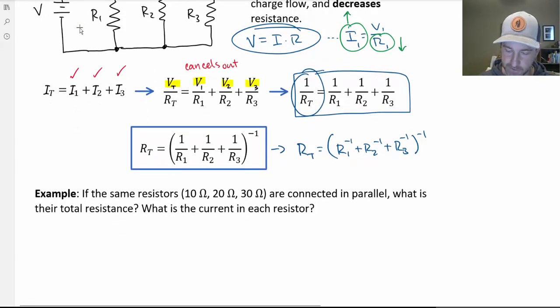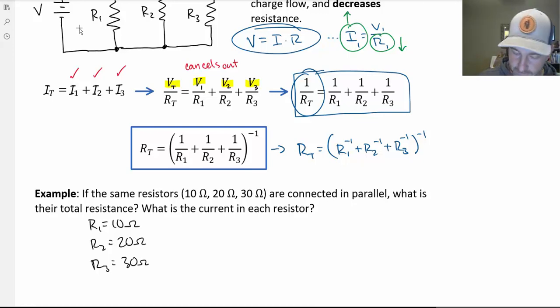Let's try out a problem. Suppose we had the same 10, 20, and 30 ohm resistors that were connected in series up above, now they're connected in parallel. What's the total resistance in the circuit? Officially, this would be 1 over R total equals 1 over 10 ohms plus 1 over 20 ohms plus 1 over 30 ohms.